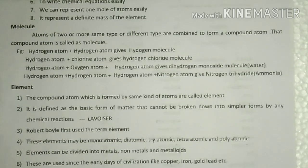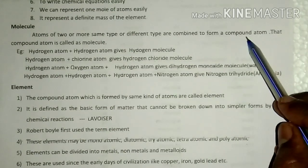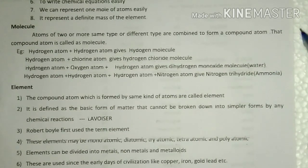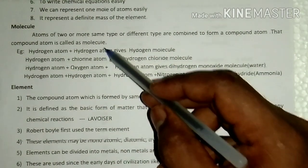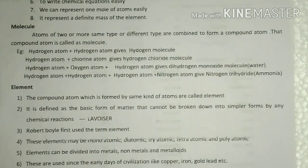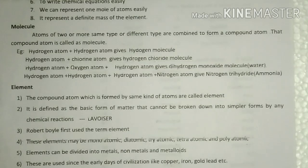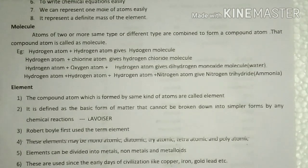This grouping of atoms is called a compound atom, and a compound atom is also called a molecule. A molecule is a group of atoms formed by either same kind of atoms or different kinds of atoms.